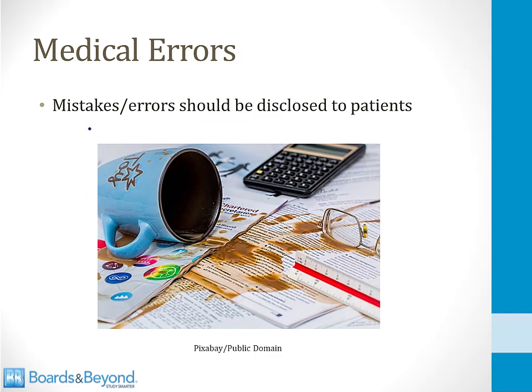The rules around medical errors are very simple. Mistakes and errors should always be disclosed to patients. There is a large literature base showing that if you immediately admit an error, patients will usually forgive you, and this will lead to fewer problems down the road. So if you're faced with a board question where a medication is given in error or there's a mistake during a surgical operation, the answer is always to tell the patient right away what happened.